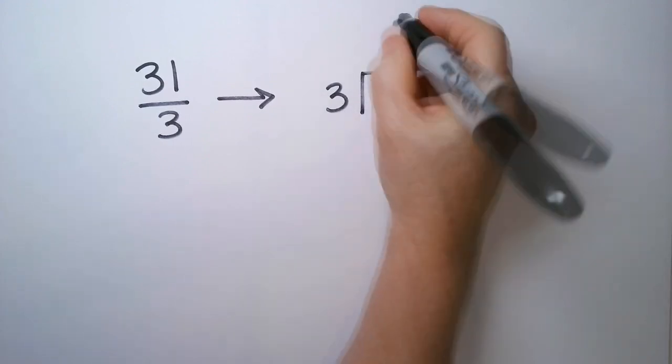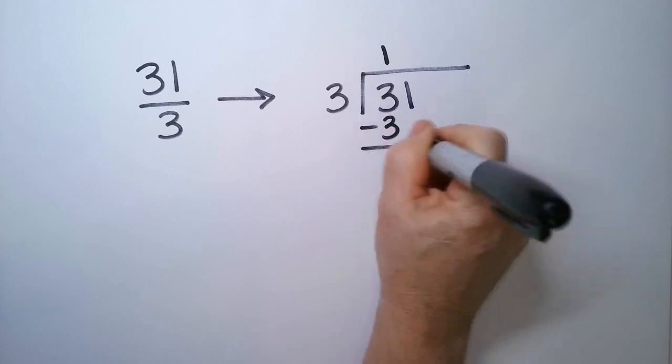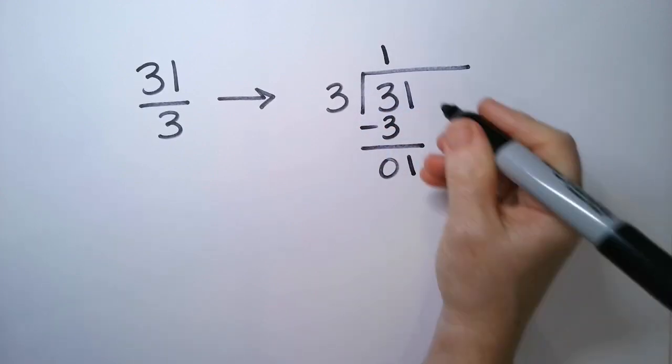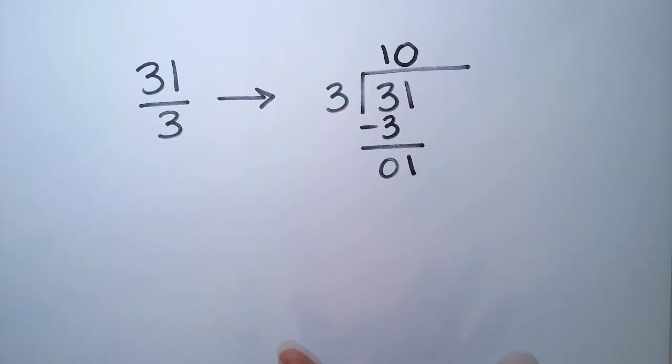3 goes into 3 one time, minus 3 is 0. Bring down the 1, and it doesn't go in. So we put it as 0, and then we're going to stop.